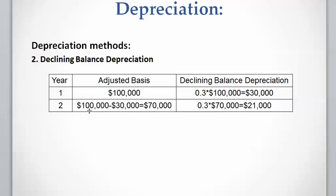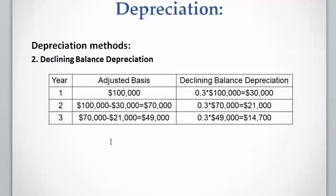For year two, we deduct the prior year's depreciation from the prior year's adjusted base: $100,000 − $30,000 = $70,000 adjusted base. $70,000 × 30% = $21,000 of depreciation for year two. For year three, the adjusted base is $49,000, and multiplying by the 30% declining rate gives approximately $14,700 of depreciation for year three.